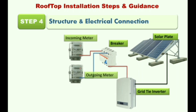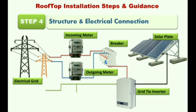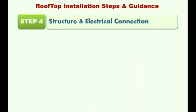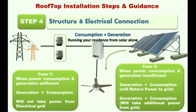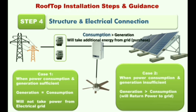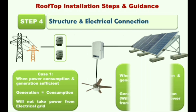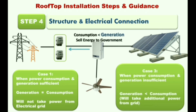Now let's understand how the plant operates. There are three conditions: First, if power generation and consumption are equal, the grid shows neutral consumption and your bill is zero. Second, if your consumption is more than generation, additional units are taken from the grid — the solar plant continues to work and the extra energy comes from the grid. Third, if consumption is less than generation, additional units are sent to the utility grid and you are paid for selling electricity to the government.